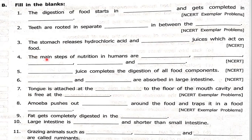The main steps of nutrition in humans — there are five steps. First one is ingestion, second is digestion, next one is absorption, then assimilation, and the last part is excretion. So the five steps are: ingestion, digestion, absorption, assimilation, excretion.